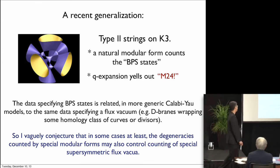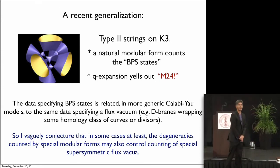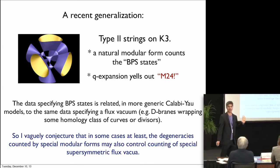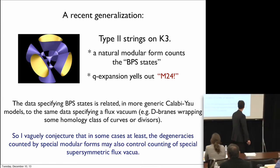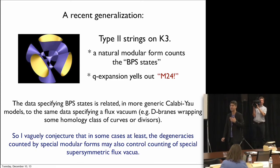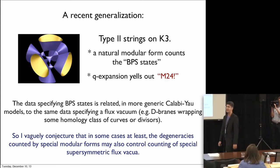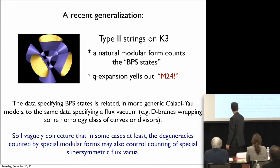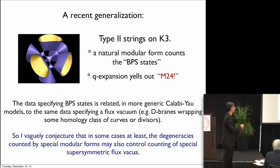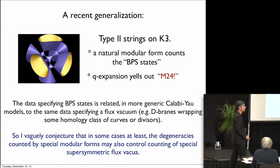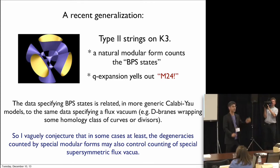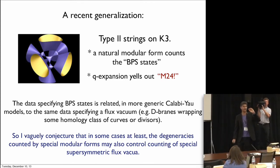This data specifying BPS states is related in more generic Calabi-Yau models to the same kinds of data specifying a flux vacuum — for instance, D-branes wrapping some homology class of curves or divisors. So I'd like to vaguely conjecture that in some cases at least, the degeneracies counted by special modular forms that arise in roughly this kind of context also control counting of special supersymmetric flux vacua. And these very large numbers aren't just 10 to the n where n is some big number — they're a precise number, and that number matters, and it's related to number theory.